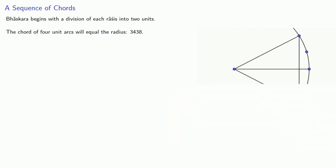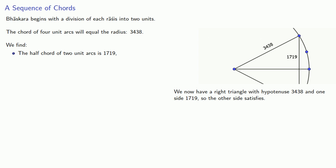Now from here, we can find the half-chord of two-unit arcs is 1719. And this gives us a right triangle with hypotenuse 3438, the radius, and one side 1719. And so the other side satisfies x squared plus 1719 squared equals 3438 squared.